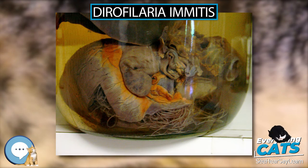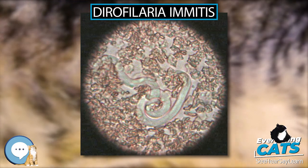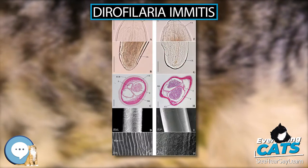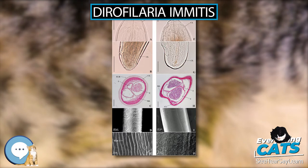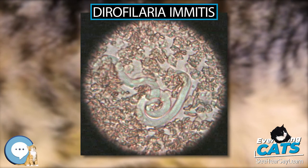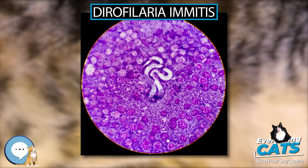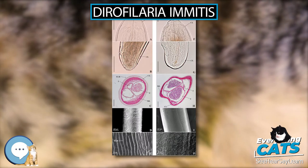Wolbachia pipientis is an intracellular bacterium that is an endosymbiont of Dirofilaria immitis. All heartworms are thought to be infected with Wolbachia to some degree. The inflammation occurring at the die-off of adult heartworms or larvae is in part due to the release of Wolbachia bacteria or protein into the tissues. This may be particularly significant in cats, in which the disease seems to be more related to larval death than living adult heartworms. Treating heartworm-positive animals with an antibiotic such as doxycycline to remove Wolbachia may prove beneficial, but further studies are necessary.